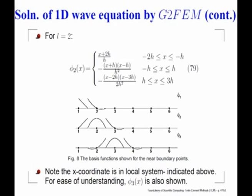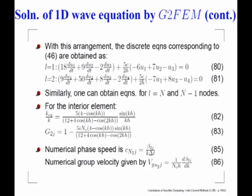For L equal to 1, this is the discrete equation; for L equal to 2, this is the equation. Having obtained the discrete equations, we write k_equivalent/k using the Fourier-Laplace transform. Applying Euler time integration, we get the numerical amplification factor g^(2). Once again, the modulus of g is greater than 1, so this is also an unstable method.